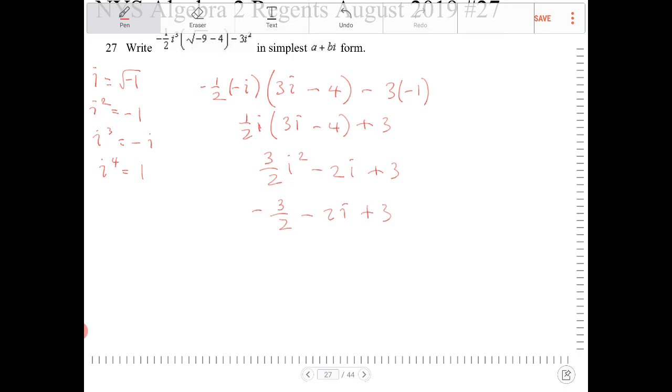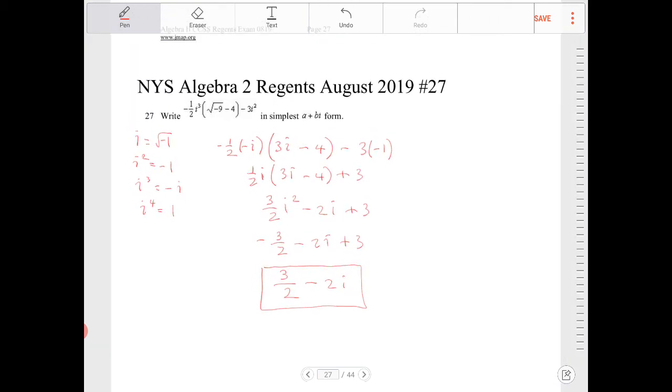Let's combine the three and the negative three halves together. And if I do, I will end up with positive three halves and then minus two i. So this is my answer. a is three halves and b is negative two.